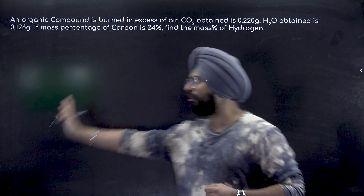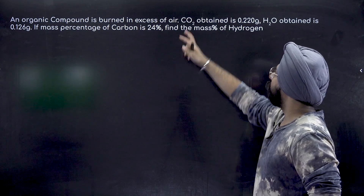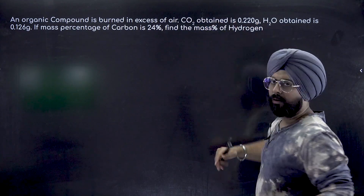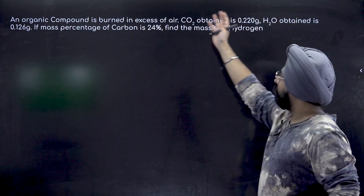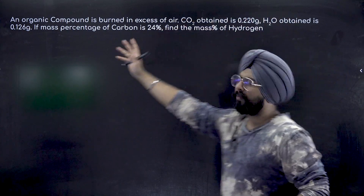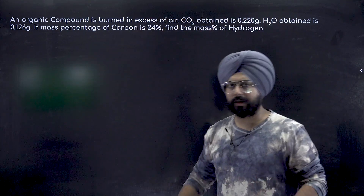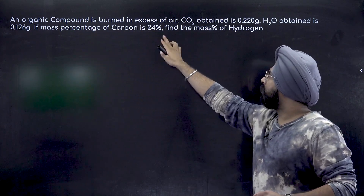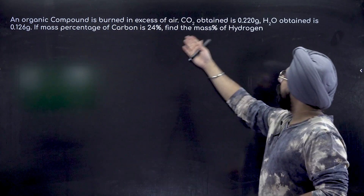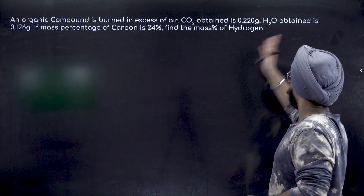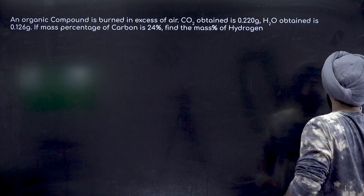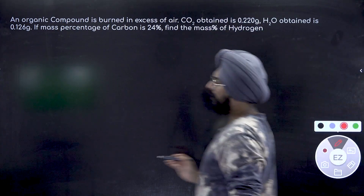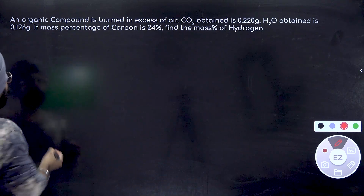An organic compound is burned in excess of air. CO₂ is obtained obviously, and water is also obtained. The masses of both of them are given. If the mass percentage of carbon is 24, find the mass percent of hydrogen in the original compound.